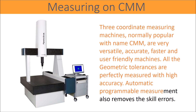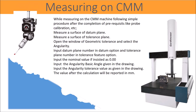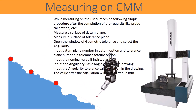Automatic programmable measurement alone removes skill errors. While measuring on the CMM, follow this simple procedure after completing prerequisites like probe calibration: measure the surface of the datum plane; measure the surface of the tolerance plane; open the geometric tolerance window and select angularity; input the datum plane number in the datum option and the tolerance plane number in the tolerance feature option; input the nominal value as 0.00; input the angularity basic angle given in the drawing; input the angularity tolerance value as given in the drawing. The calculated value will be reported in mm.